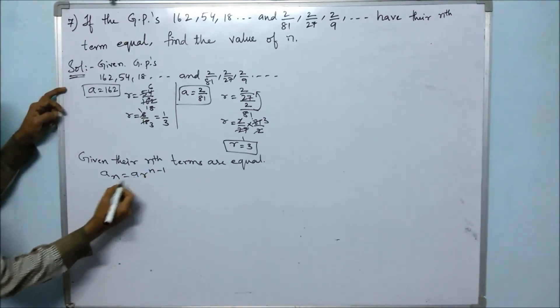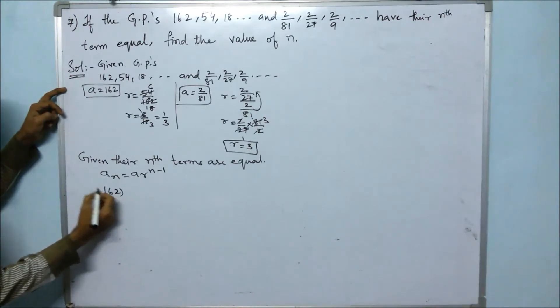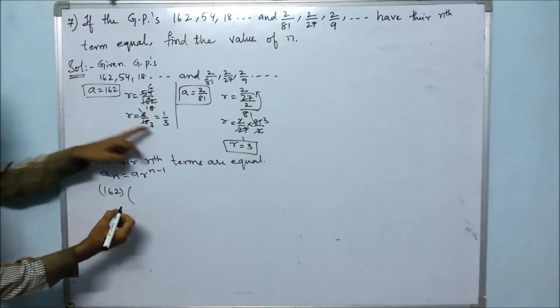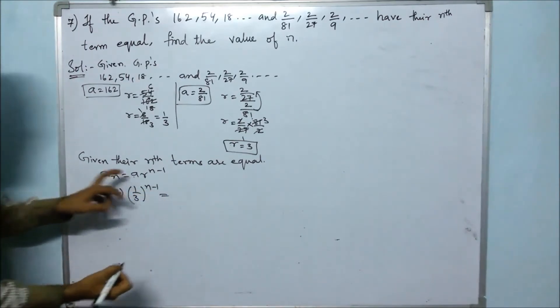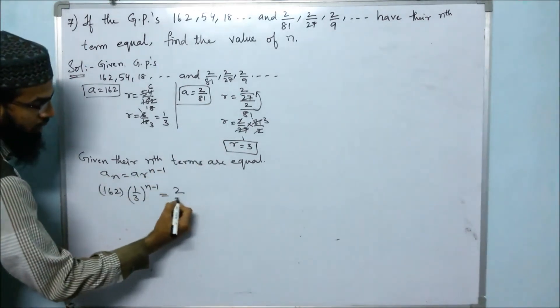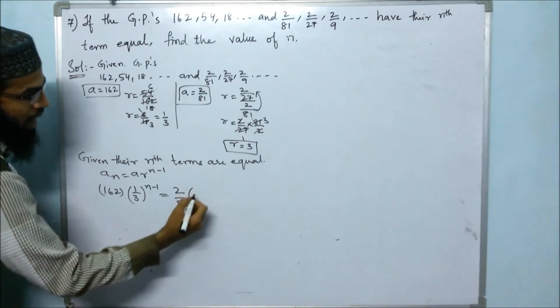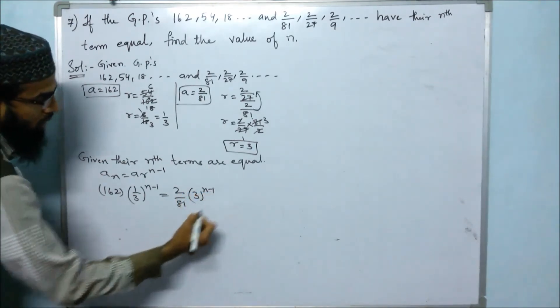For the first GP: 162 times (1/3) to the power of n minus 1. For the second GP: (2/81) times 3 to the power of n minus 1. Setting them equal.